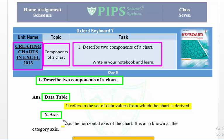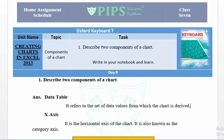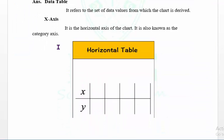Next is the x-axis. The x-axis is the horizontal axis of the chart. There are two axes — vertical and horizontal. The x-axis is the horizontal axis, and it is also known as the category axis.